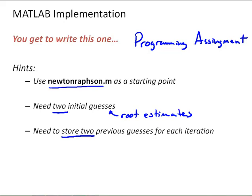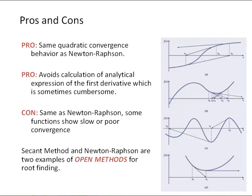And let's finish up this video by talking about some pros and cons of the secant method. A big pro, it has the same quadratic convergence behavior as Newton-Raphson. So, we know that it is efficient. We like that. Another pro, in contrast to Newton-Raphson, is it avoids calculation of an analytical expression of the first derivative, which is sometimes cumbersome. Now, this wasn't a big deal in the example with the exponential function that we've been using, but it could be a big deal in lots of other situations.